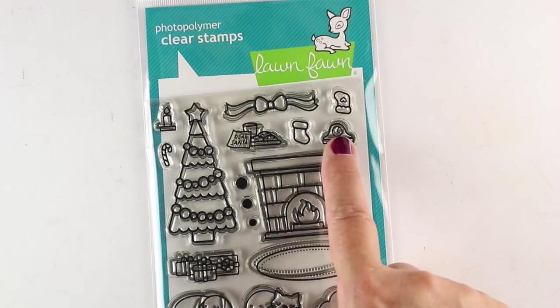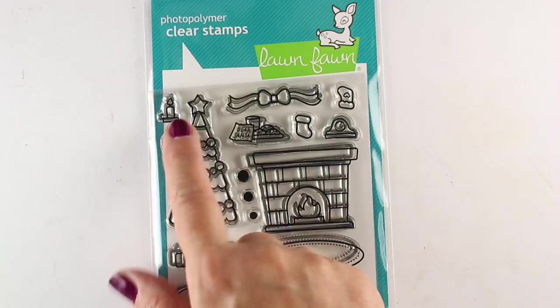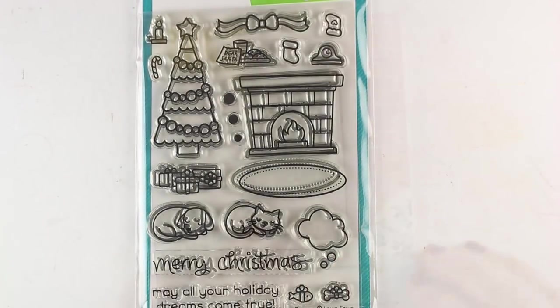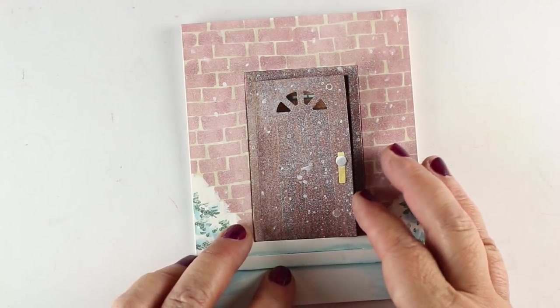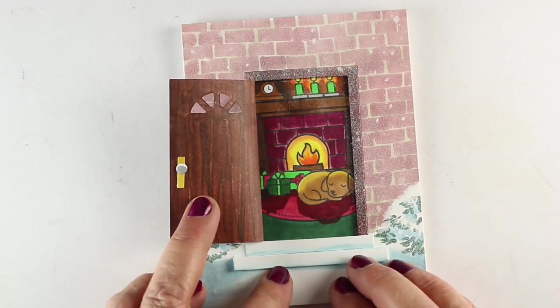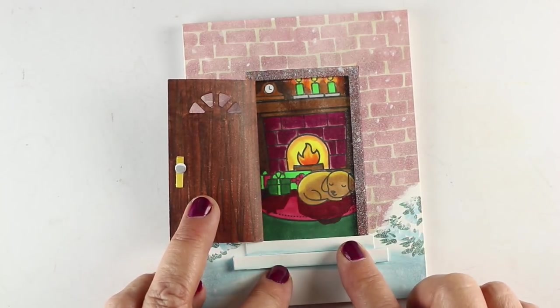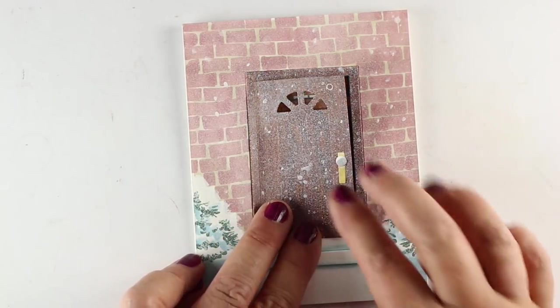I used the Christmas Dreams set which has lots of different things. You can put a Christmas tree in there, you can put lots of different things in the scene. I just used the fireplace and little puppy and the gifts and some candles up on top of the fireplace to make a little scene.